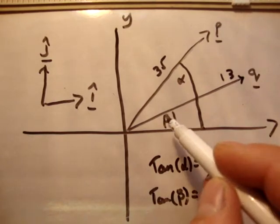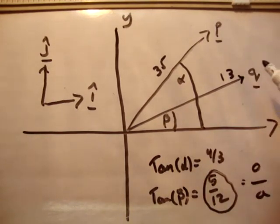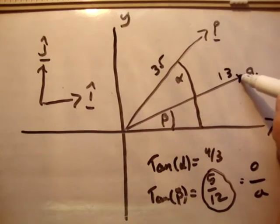We're also given two angles, angle beta for the vector Q and angle alpha for vector P. We're also given that tan(α) is equal to 4 over 3 and tan(β) is equal to 5 over 12. So the first thing we need to do is we need to resolve these resultant vectors into their component unit vectors.